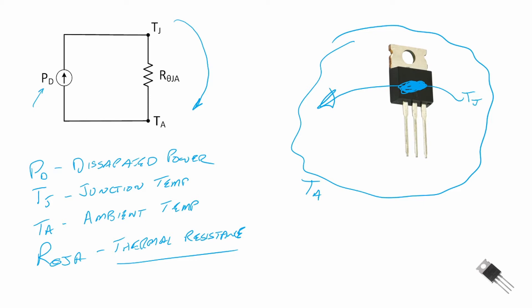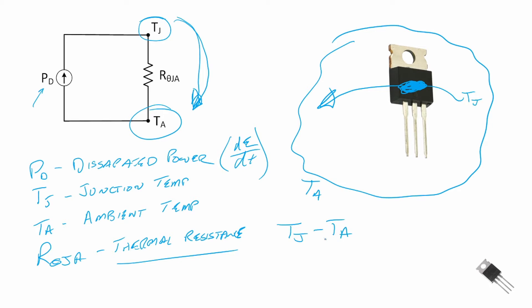We model the dissipated power as a current source because recall power is the time rate change of energy, and so it behaves similar to a current source and the flow of energy is similar to the flow of charge. We also look at the temperatures in an analogous way to voltages. The power flow out of the device can be written as the temperature in the junction minus the temperature in the ambient — the differential temperature between the junction and the ambient — divided by the thermal resistance, which tells us how much energy flow can come out of the device.